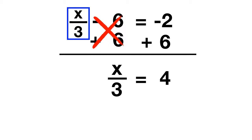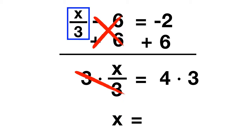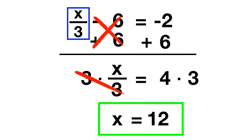Now all that's left is cancelling out the division by 3. To cancel out division, multiply by 3. The 3 over 3 cancels out, leaving you with just x. And on the other side of the equation, 4 times 3 gives you your answer of 12.